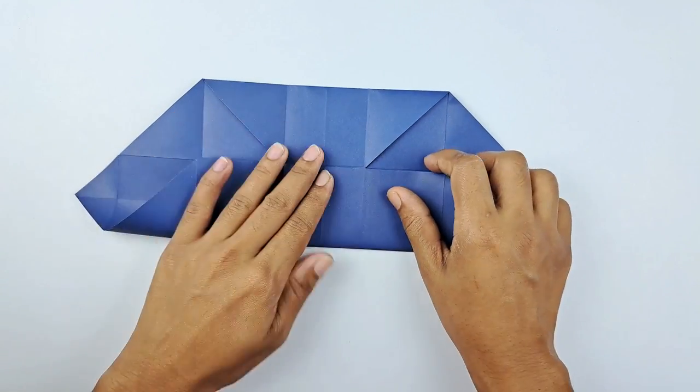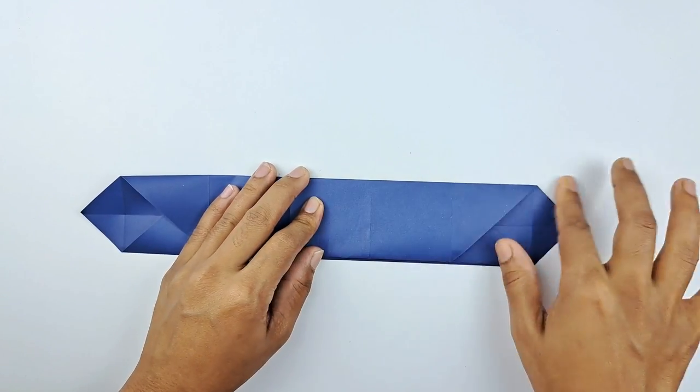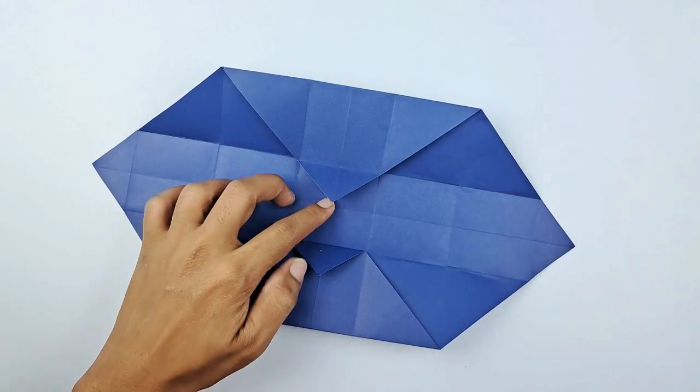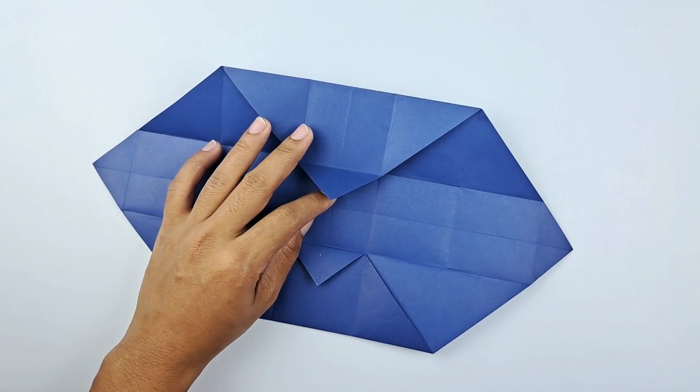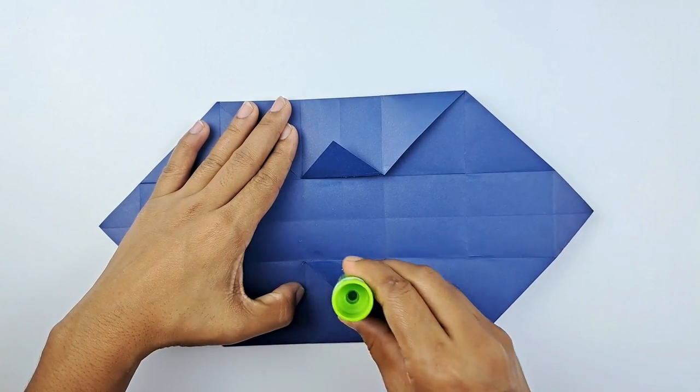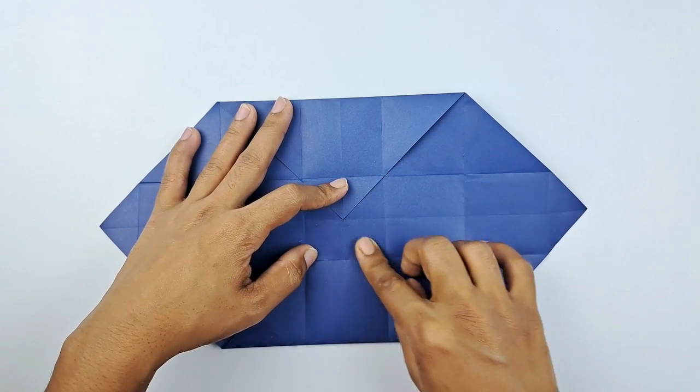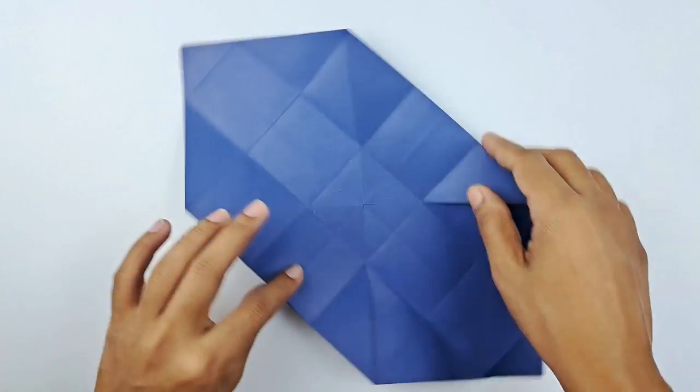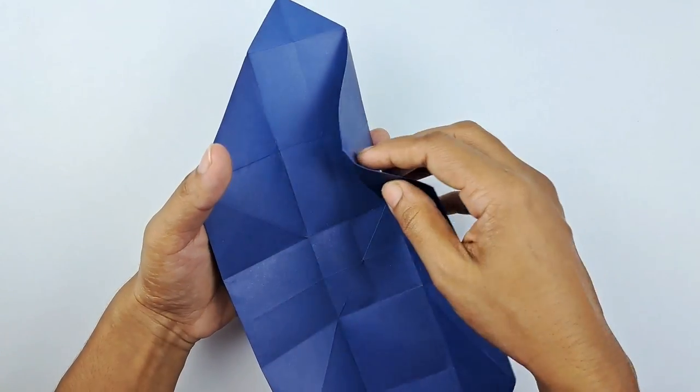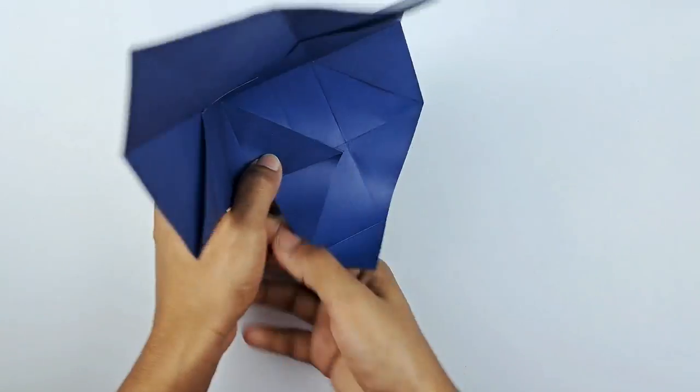Now we're going to open up and then fold like this, so it looks a bit like a tie. And we're going to open it out again, and use those creases that we made earlier, to fold in like so. And let's smooth down those edges, and we're going to do the same on the other side, like this.